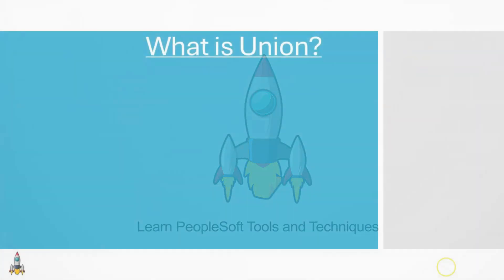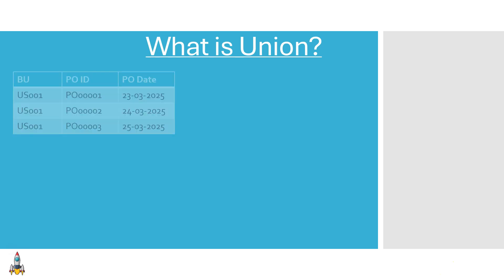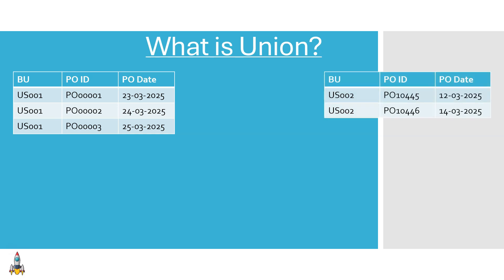So first things first, what exactly is a union? Let's say we have Table 1, which contains the transaction data for purchase orders. Similarly, we have Table 2, which is another table containing a different set of transactions related to purchase orders. If you look closely, the data present in Table 1 is completely different from the data in Table 2 — there is no common value between them. Hence, the data is completely unrelated.